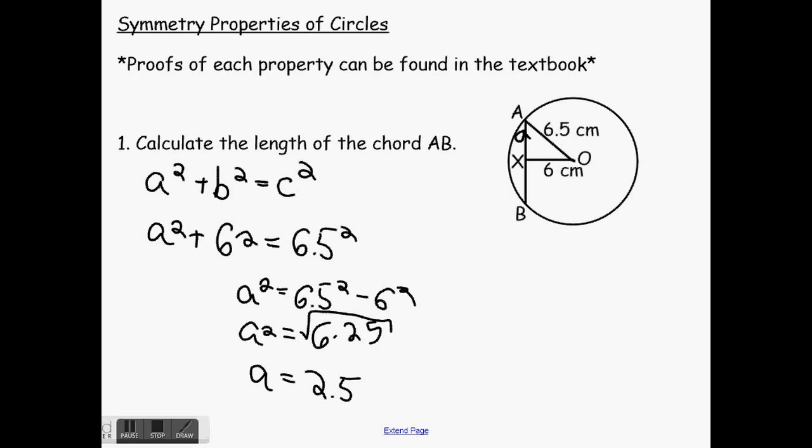So if our side A there is 2.5 centimeters, what is the length of the chord AB? This is the perpendicular bisector, which means both of these sides are the same length. So if this is 2.5, this is also 2.5. Chord AB is 5 centimeters.